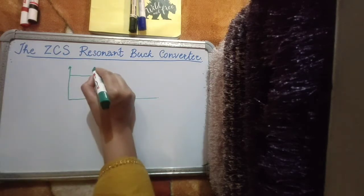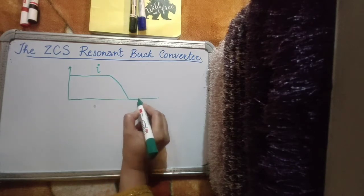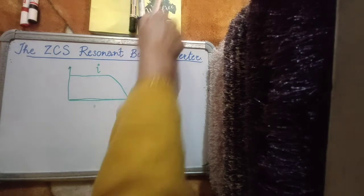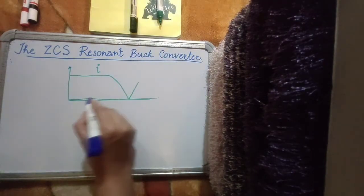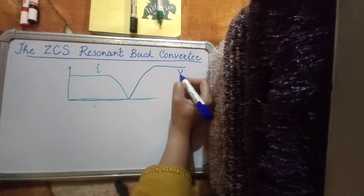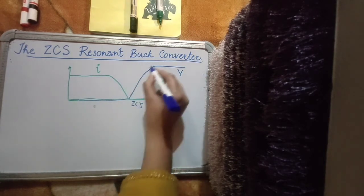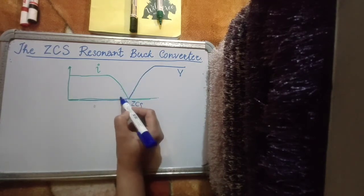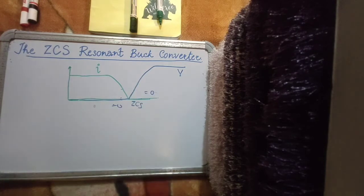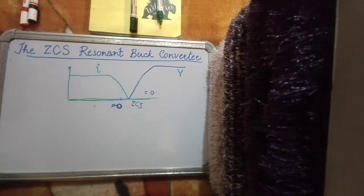If we talk about zero current switching first, the current will become zero during turn off and only then the voltage will rise. This is zero current switching where the current first becomes zero and then the voltage rises. As a result during the transition V into I is zero, so the switching power loss across the device is zero.